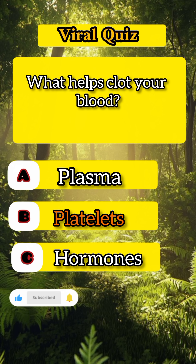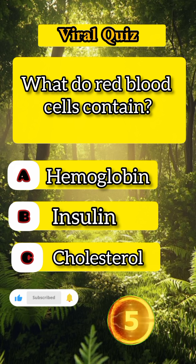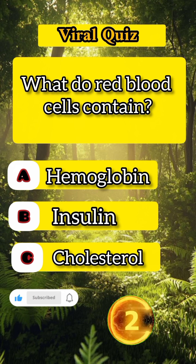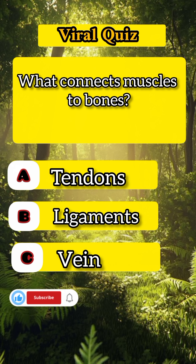Question four: what helps clot your blood? Answer: platelets. Question five: what do red blood cells contain? Answer: hemoglobin.